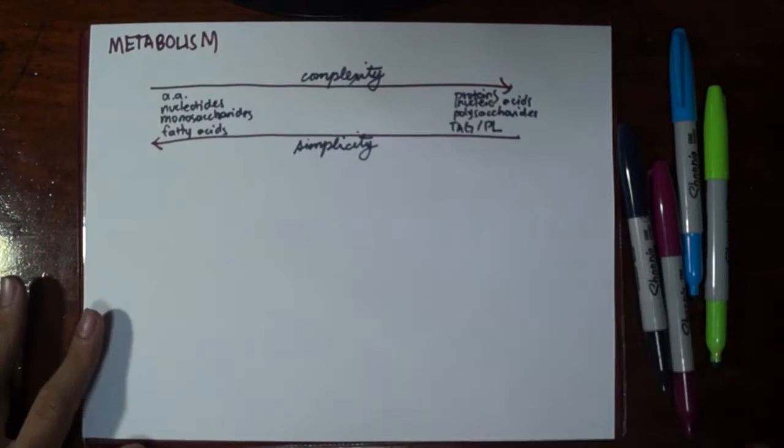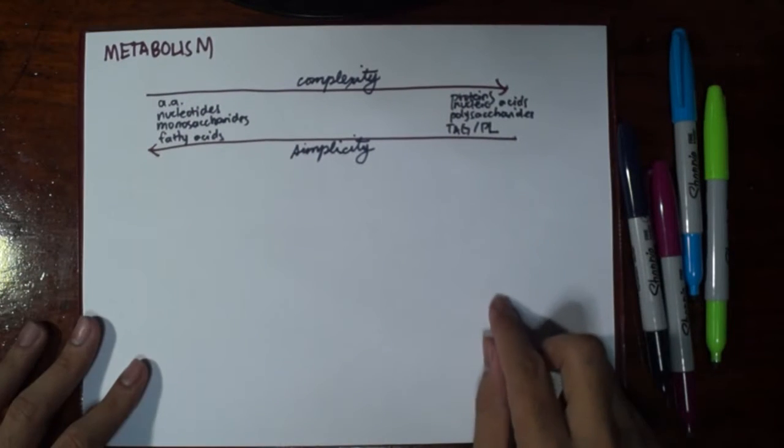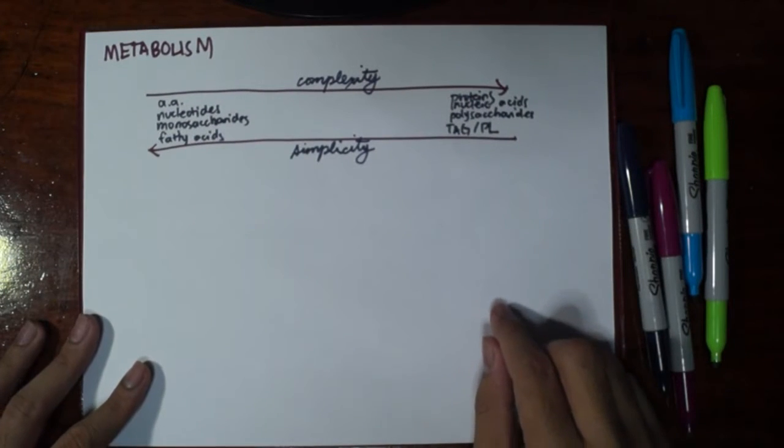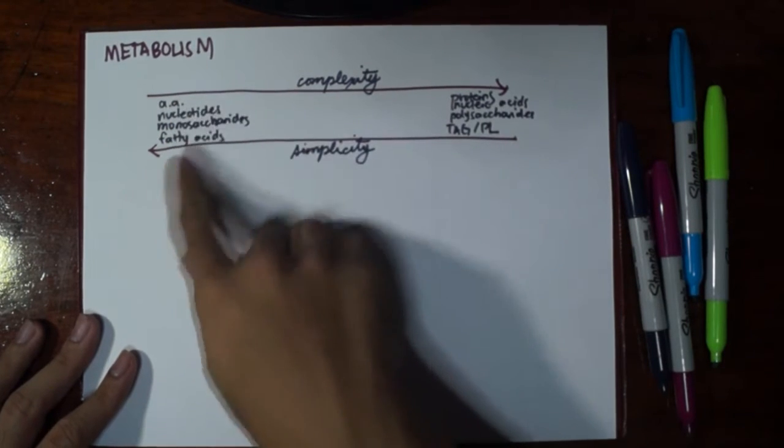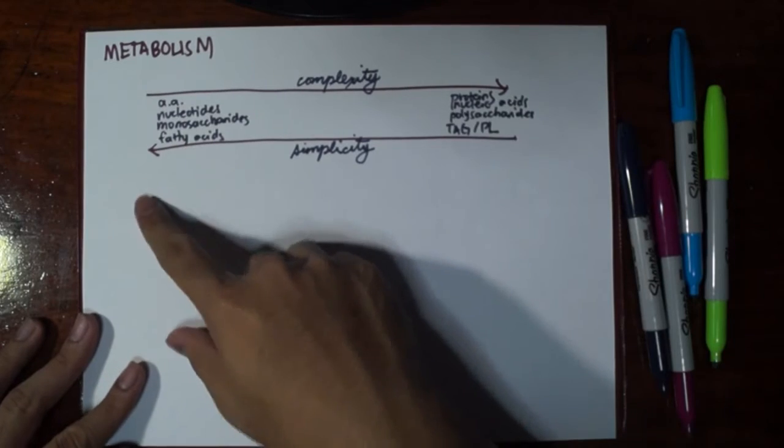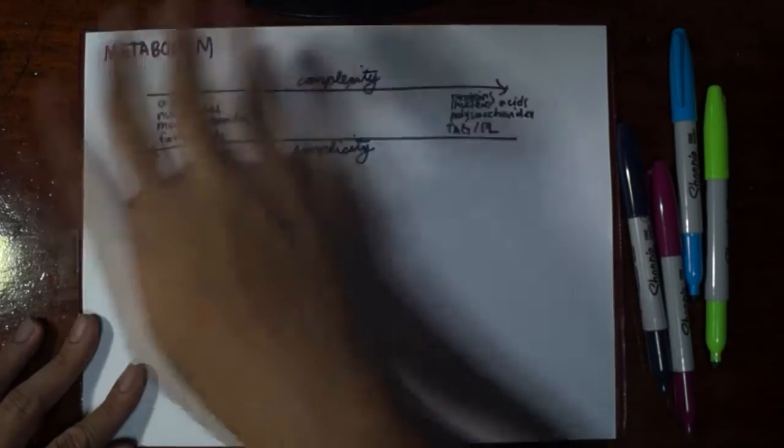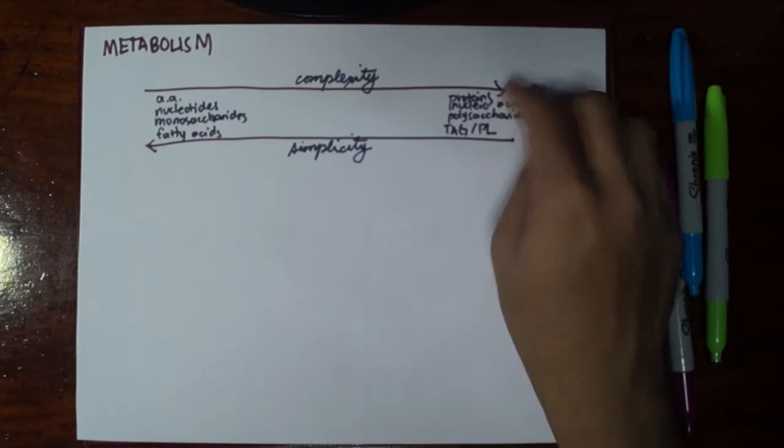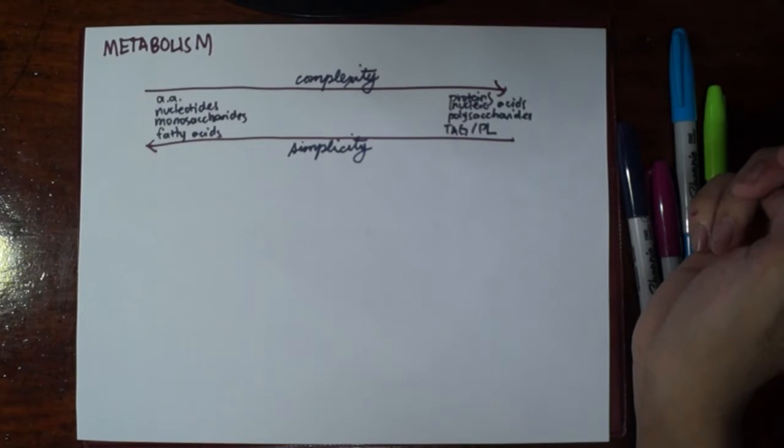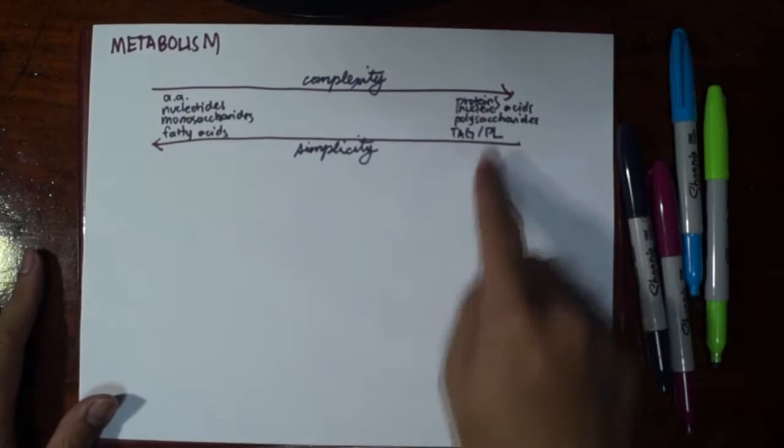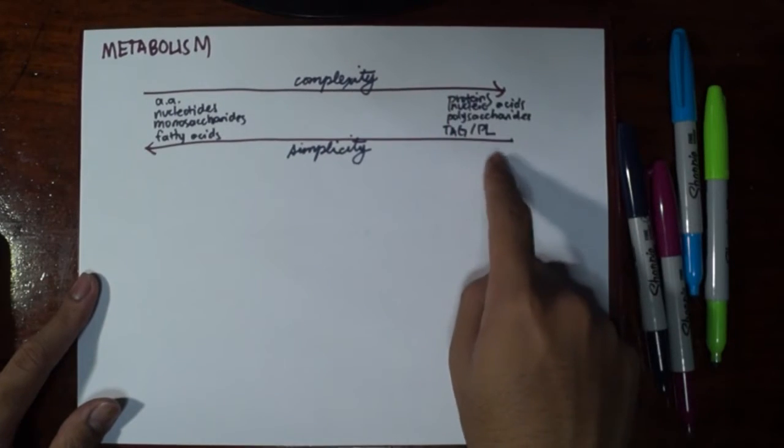The chemical processes going on within the body can go in two directions. You start from smaller units or the monomers such as amino acids, nucleotides, monosaccharides, fatty acids and build them up in increasing complexity to form the larger proteins, nucleic acids, polysaccharides, and triacylglycerols or phospholipids. Or you could go the other way around, taking these large molecules and simplifying them by breaking them down into their components.